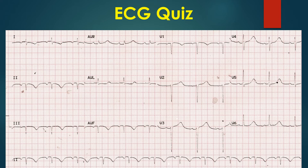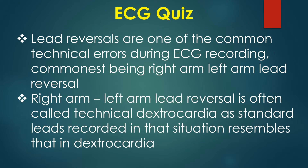Sometimes one may have a doubt whether it is a transient supraventricular rhythm abnormality. But QRS abnormalities reverting back to normal rules out that possibility. Lead reversals are one of the common technical errors during ECG recording. The most common being right arm–left arm lead reversal, often called technical dextrocardia, as standard leads recorded in that situation resemble those in dextrocardia. Chest leads will not be altered in that case, which clinches the technical error.